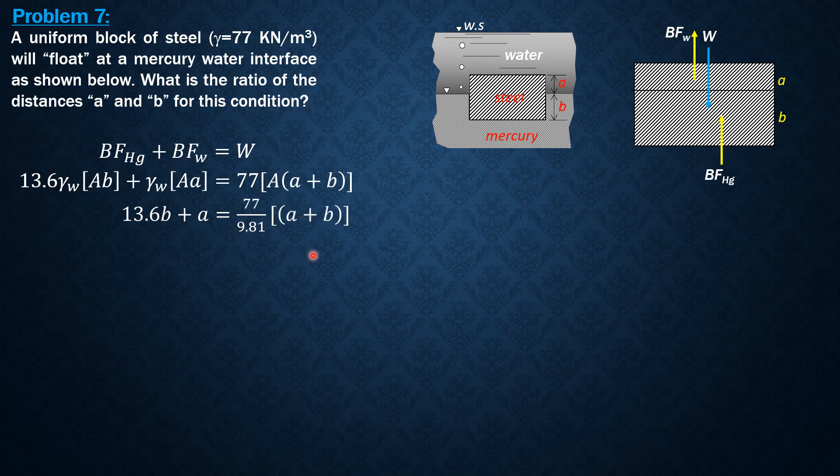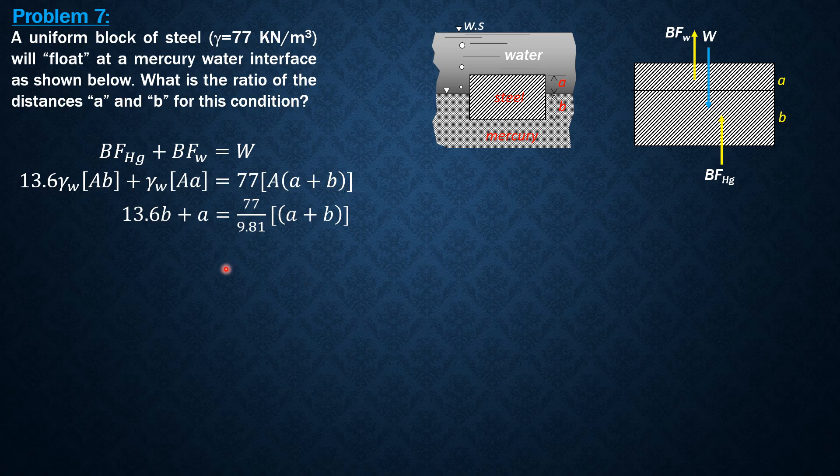Simplifying and combining like terms: 13.6 minus 77 over 9.81 is 5.751b. Then 77 over 9.81 minus 1 minus a is 6.849a.